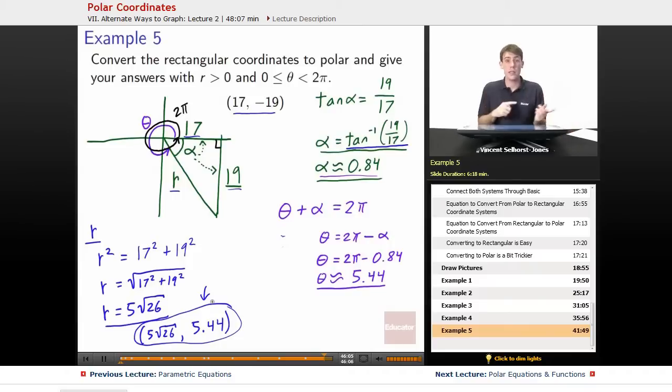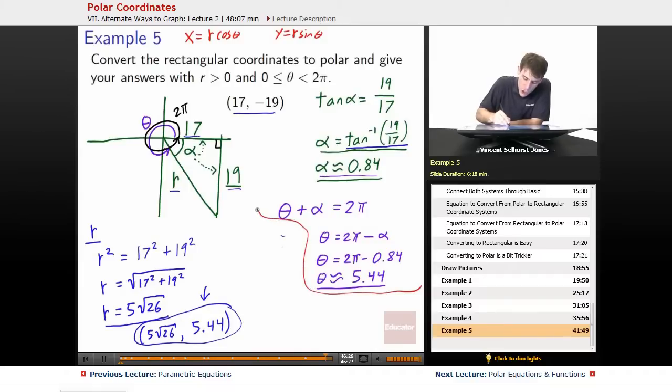Now we didn't do this in the last problem, but I want you to see that you can also check your work here. If you're not quite sure that it all came out right, we can check our work. We can go to polar, but then since it's so easy to convert from polar back to rectangular, we just plug them in. Remember, to convert to rectangular, x equals r cosine theta, y equals r sine theta.